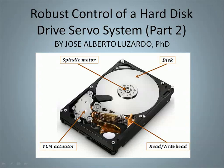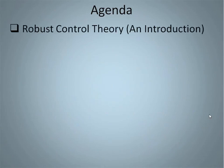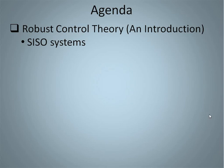Good day everyone. My name is Jose Alberto Luzardo. This is part number two of our presentation on robust control applied to a hard disk drive. In part number one, we introduced the robust control ideas for SISO systems — single input, single output systems. Today we continue explaining these ideas for the case of MIMO systems, that is multiple input, multiple output systems. A good understanding of the robust control concept is indispensable to use the software tools that make our lives easy at the time of designing the controller.